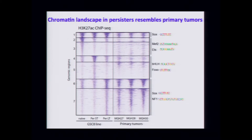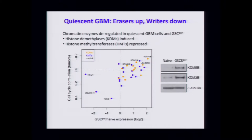We can look at the regulatory elements of the different cell states. Here are the naive proliferative GSCs, and here are the persisters that are cycling very slowly and PDGFR-independent. You can see enhancers that are common in various patterns, and then there's a big group that seems quite a bit stronger in the persisters. What's striking is that if you go back and look at the tumors, the tumors actually look much more like these persisters. These RTK-inhibited persister cells that are very slow cycling look a lot more like the primary glioma tumors.